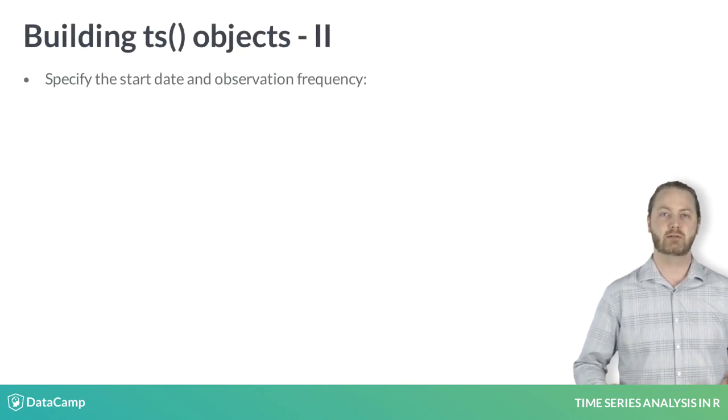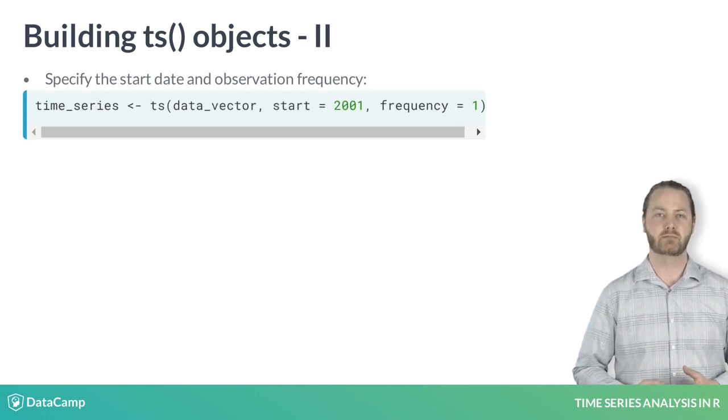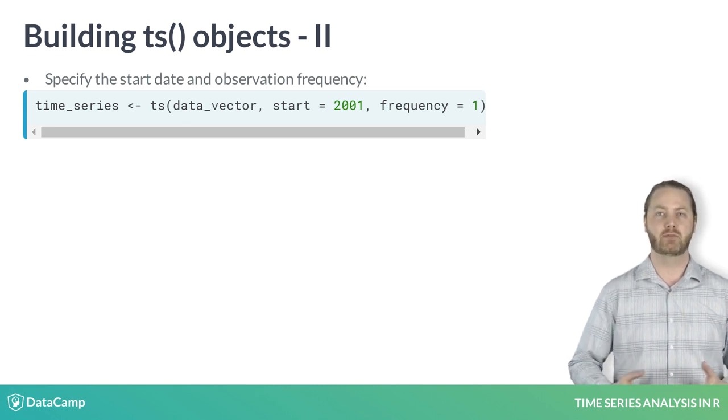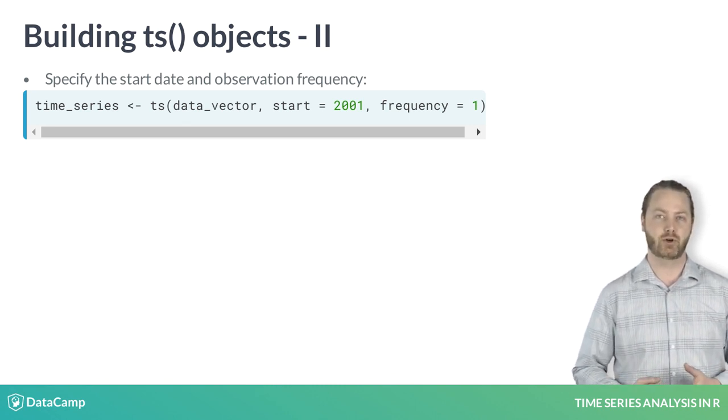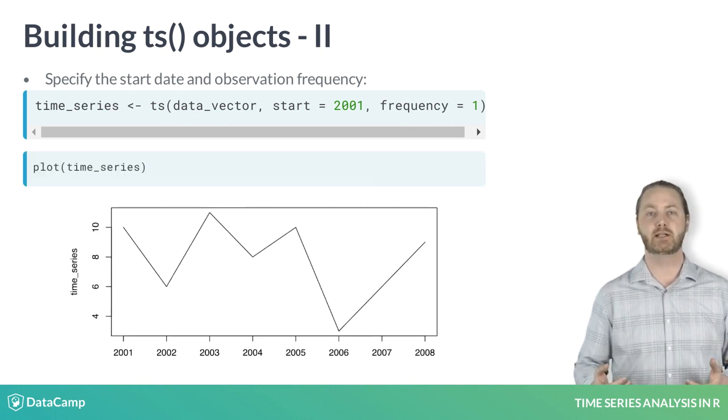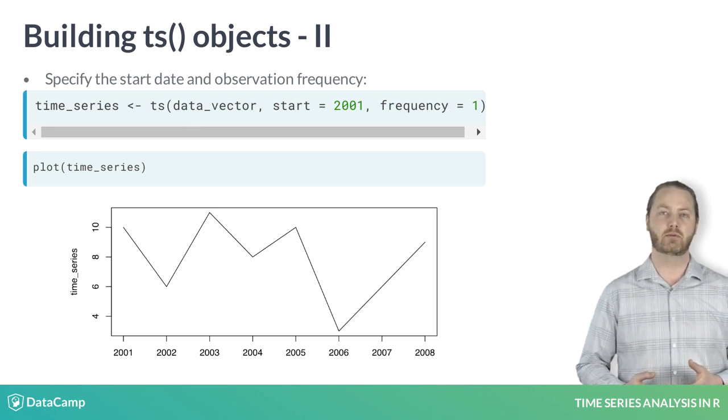If you want the time series to start in the year 2001 with one observation per year, you should apply the ts function with the additional arguments start equal 2001 and frequency equal 1 as shown. Now when you plot the result, you can see an updated time axis running from 2001 through 2008.